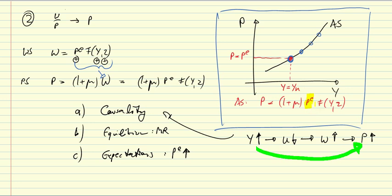So if PE rises the AS curve is shifted upwards and PE ultimately will adjust so that PE adjusts to P and we attain this new medium run equilibrium.